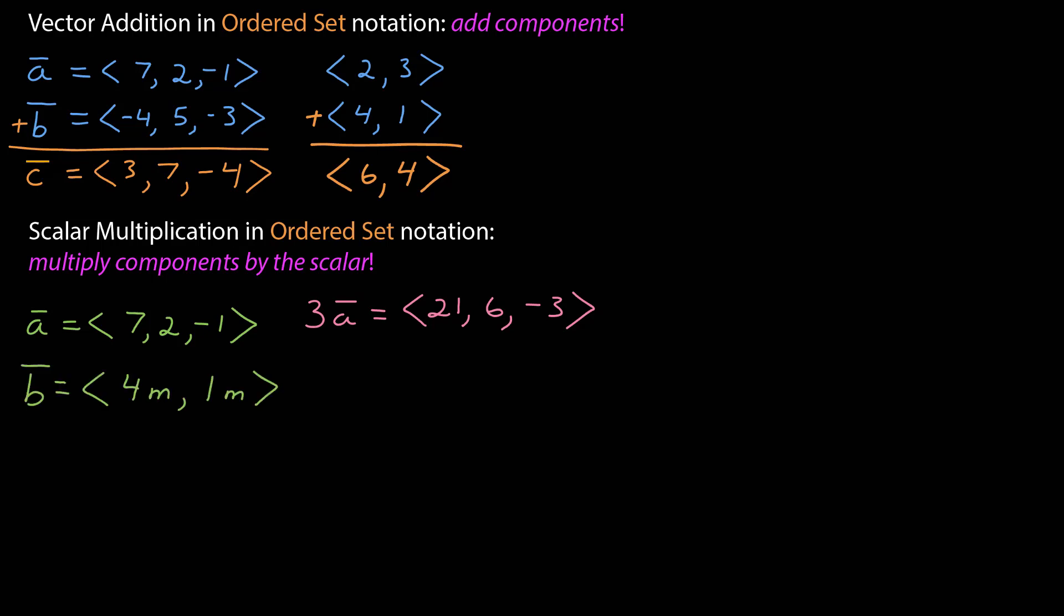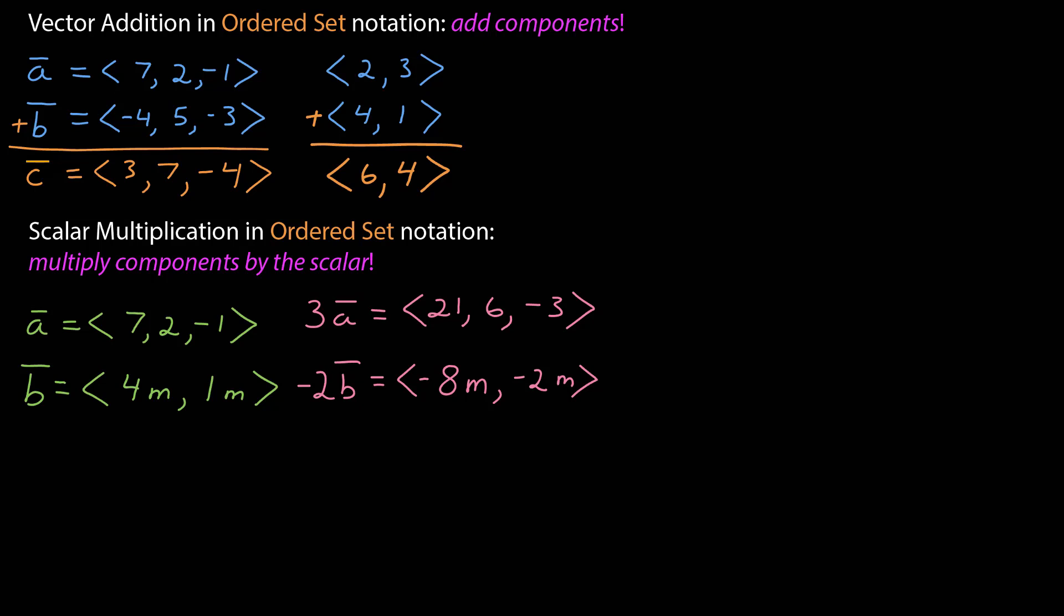If b is 4 meters and 1 meter, then negative 2b has an ordered set of negative 8 meters, negative 2 meters. Notice that this means the value of the scalar magnifies the magnitude of the vector, and the negative sign switches the direction.